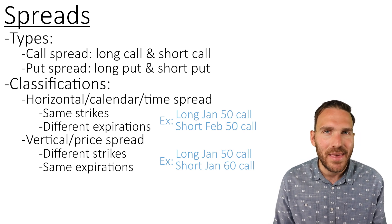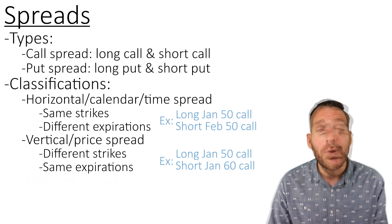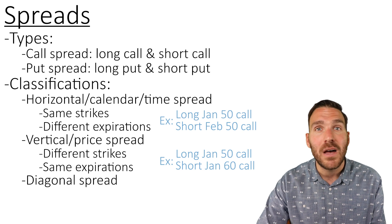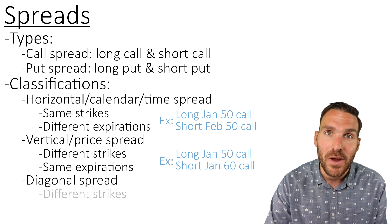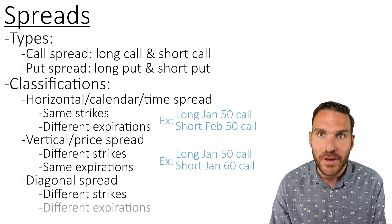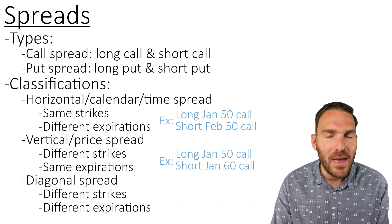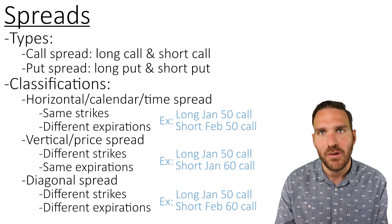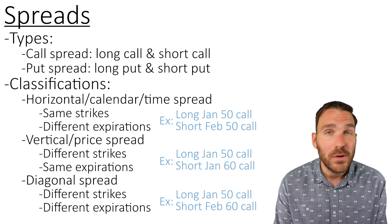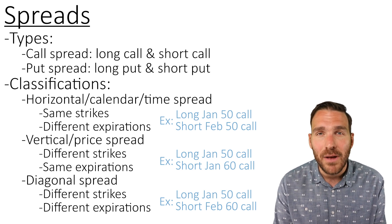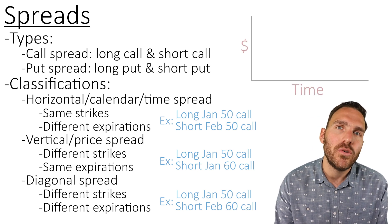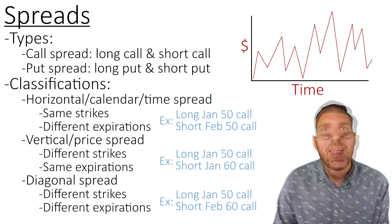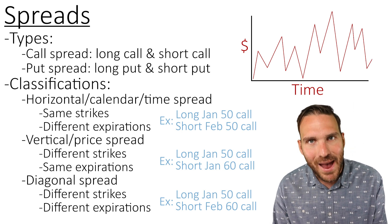The last spread classification is a combination of the two. We call this a diagonal spread. This involves a spread where we have a difference on both sides — different strike prices and different expirations. An example would be a long Jan 50 call and a short February 60 call. The terms horizontal, vertical, and diagonal come from a chart — prices are on the vertical axis and time is on the horizontal axis.